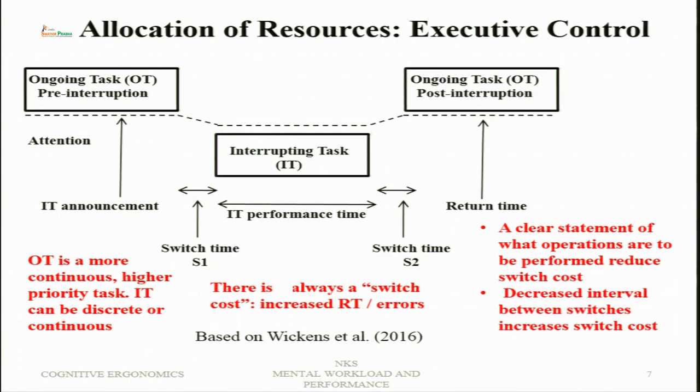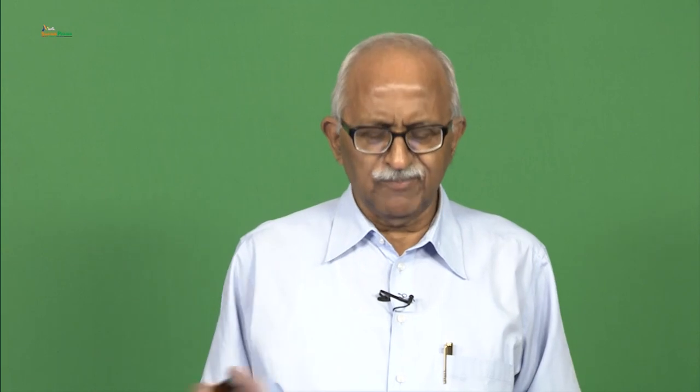When there is an ongoing task, attention is paid to that particular task and all resources are allocated to it. Then there is an interrupting task announcement that may be made. In vigilant situations the announcement may not be there, but for other situations the announcement may come in any form. For example, a receptionist who discusses with visitors, responds to telephone calls, and responds to calls from the boss — in between there may be some call to get information.